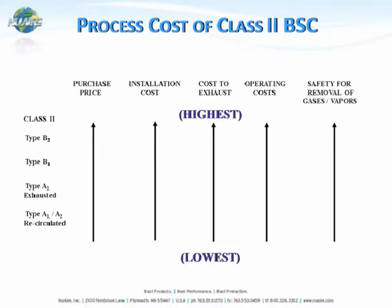By accepting higher costs with B-type cabinets, the safety for removing gases and vapors increases. If you're working with high levels of gases and vapors that need to be safely exhausted to the outside, that may take precedence over initial purchase price or cost to exhaust, and you'll want a Class II Type B1 or B2 cabinet. If you're not working with gases or vapors, you can use a recirculated A2 cabinet with a lower purchase price and installation cost.